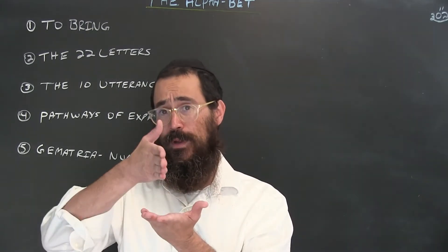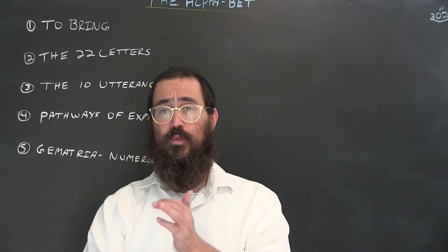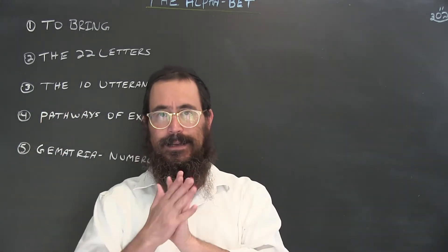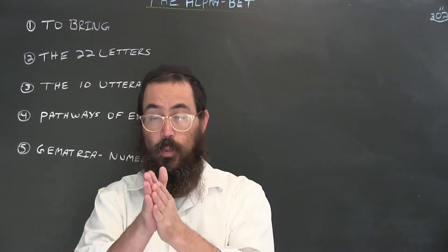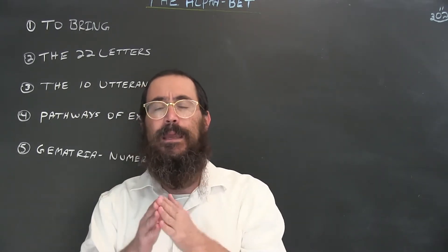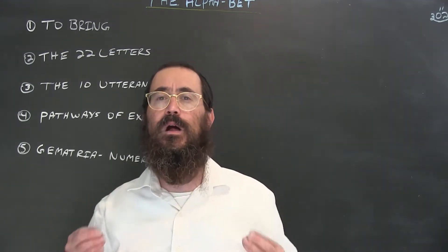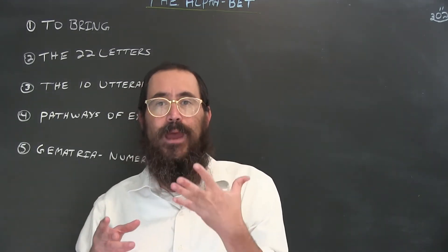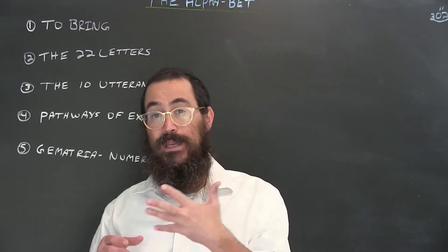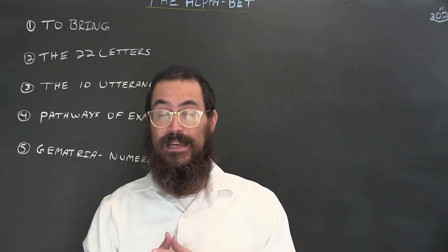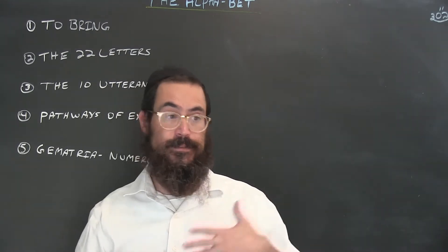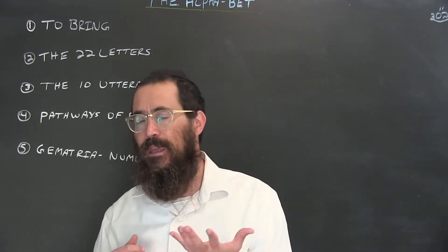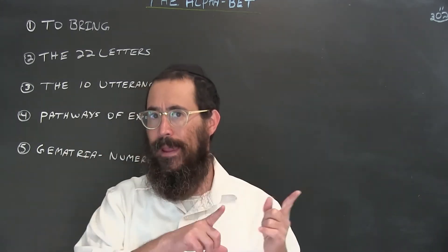We convey what we want to say from the ethereal into this world. This really is the epitome and essence of what humanity is all about. We are called 'hamedaber' — the one who speaks — because as humans we're different from the rest of the animal kingdom in our ability to convey. It's not just 'I think therefore I am,' but the capacity to take intelligence and formulate it into expression.